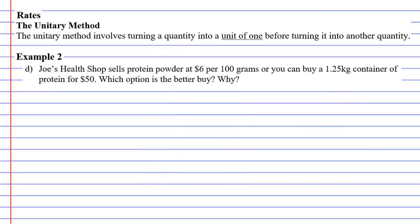Let's now move on to question D. Joe's Health Shop sells protein powder at $6 per 100 grams, or you can buy a 1.25 kilogram container of protein for $50. Which option is the better buy? Why? For this one, we're actually going to do it twice, with four boxes for each scenario.